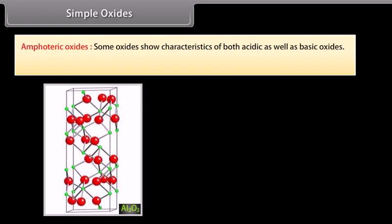Amphoteric oxides: Some oxides show characteristics of both acidic as well as basic oxides. For example, ZnO, Al2O3, GeO.